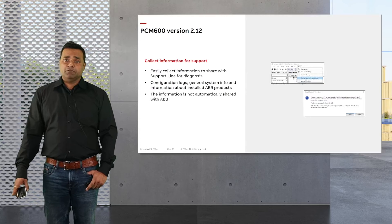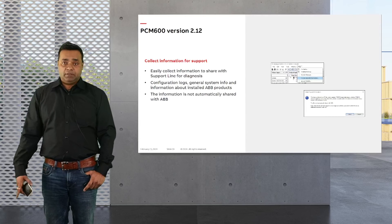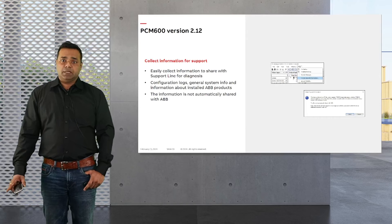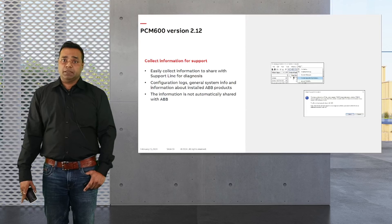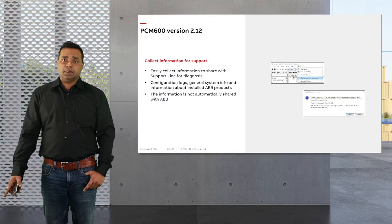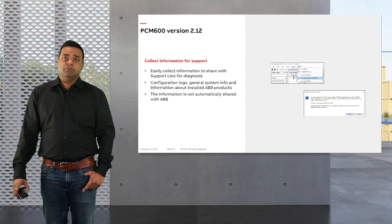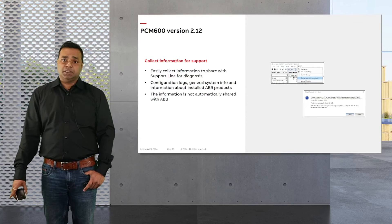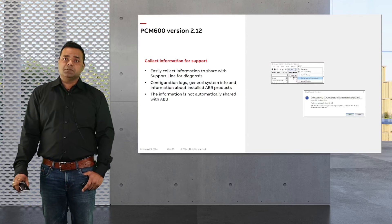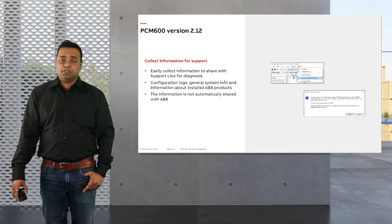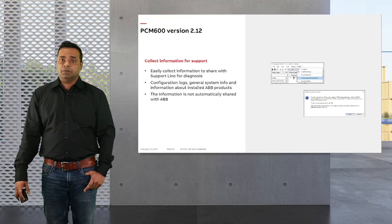Another important improvement introduced with 2.12 and available in 2.13 is the support line functionality. When a support line case is to be reported, there is often quite a lot of back and forth between the support organization and the customer, leading to unnecessary time investment. From PCM 600 2.12 onward, it is possible to easily collect and share PCM 600 related information with support line. No user information is collected. This functionality is also available via command line interface, which becomes especially useful when PCM 600 itself refuses to launch.